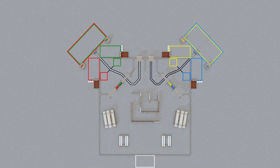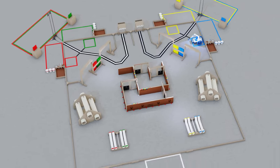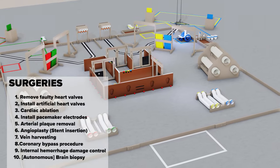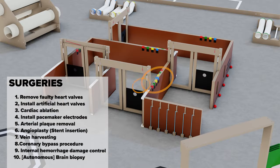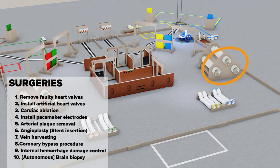You'll be able to score points by performing the following surgeries: remove faulty heart valves, install artificial heart valves, cardiac ablation, pacemaker electrode connection, arterial plaque removal, cardiac angioplasty, insertion of artery stent, vein harvesting, coronary artery bypass, internal hemorrhaging damage control, and the brain biopsy.